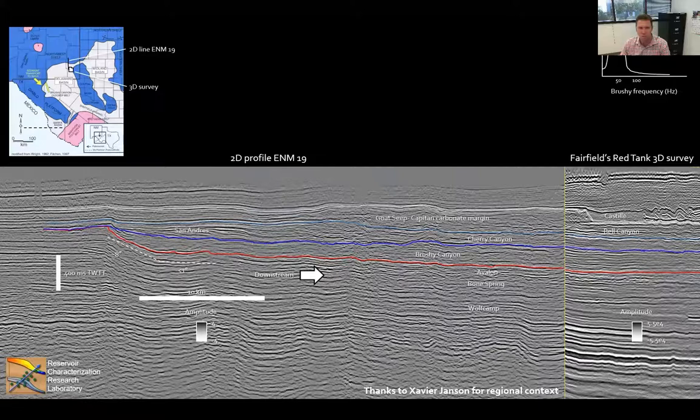The red horizon that's illustrated here is the base of the Brushy Canyon formation. The blue line is the top of the Brushy. Upstream, to the left, we can see the steep basin margin at Brushy time. And this basin margin transitions to be much flatter across several tens of kilometers into the basin. Let's take a closer look at the Red Tank region that's to the right in this diagram.